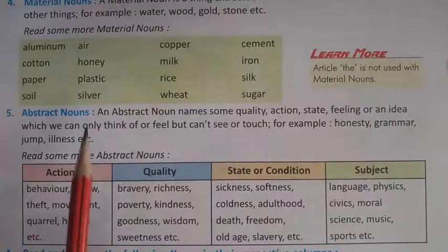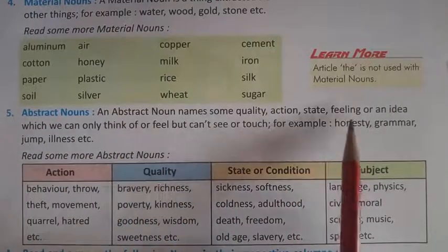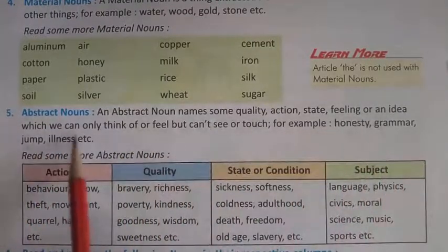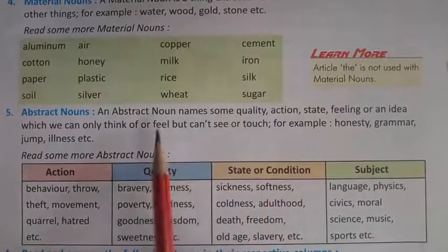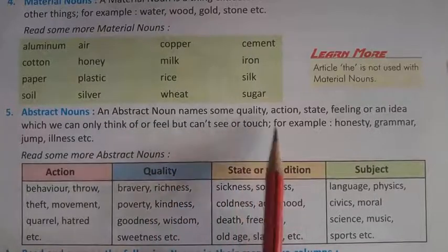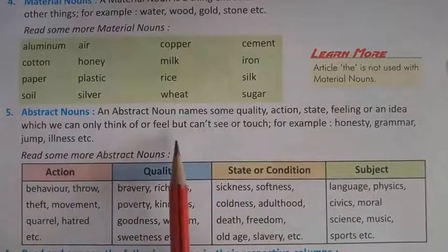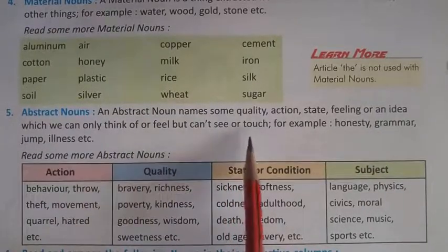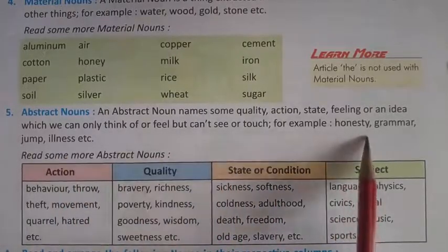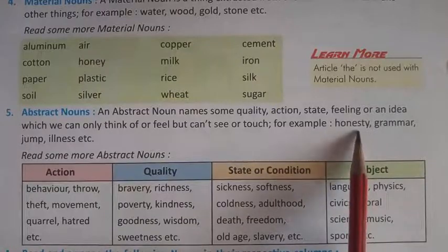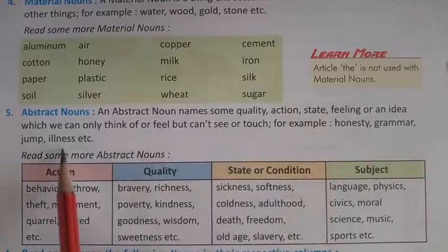Next, Abstract Noun — भावाचक संज्ञा. An abstract noun names some quality, action, state, feeling, or idea which we can only think of or feel, but can't see or touch. जैसे 'honesty' — ईमानदारी को हम देख नहीं सकते, touch नहीं कर सकते, बट उसे हम महसूस करते हैं. For example: honesty, grammar, jump, illness, etc.